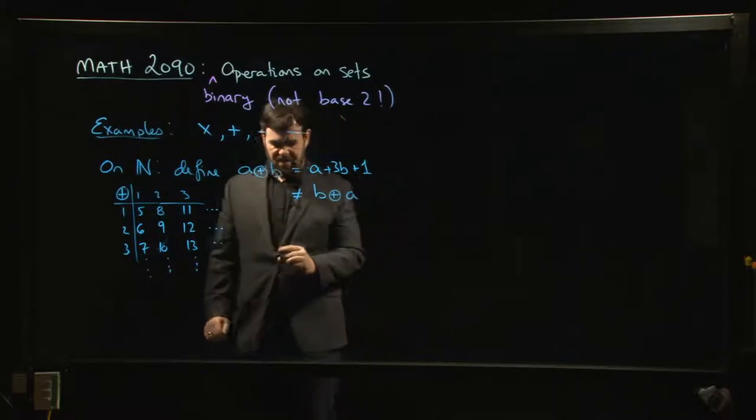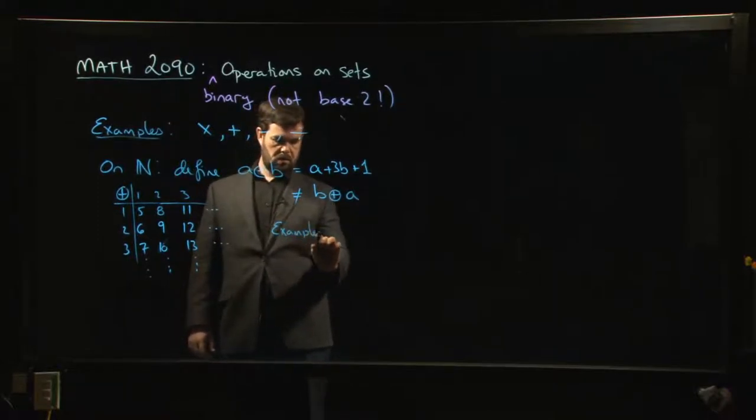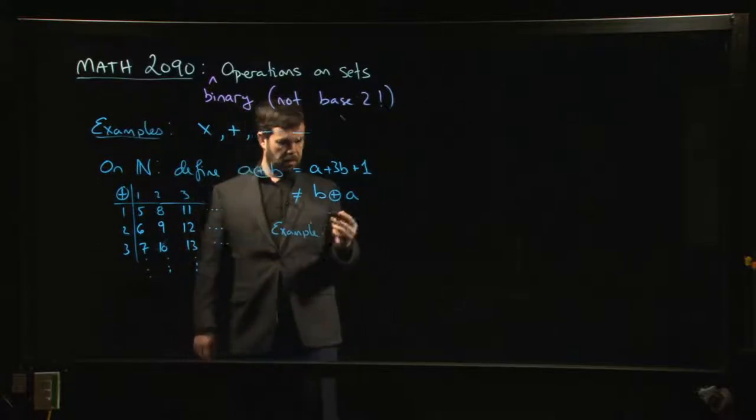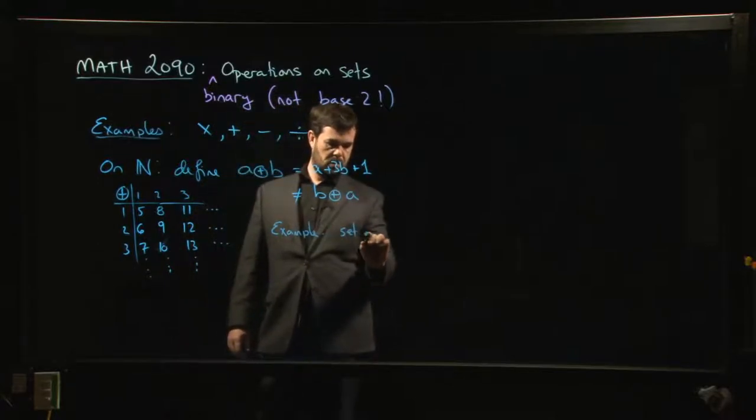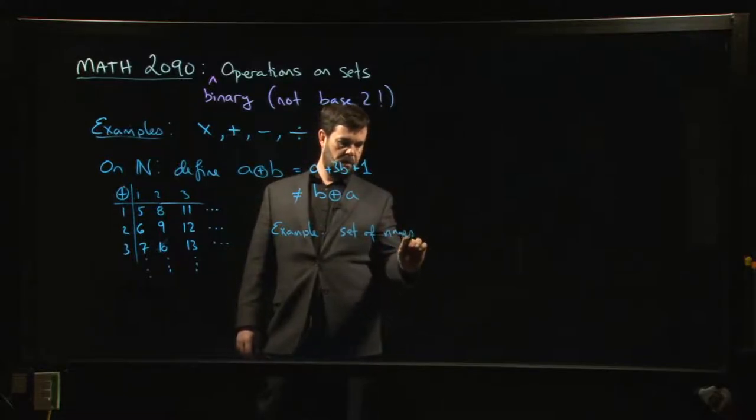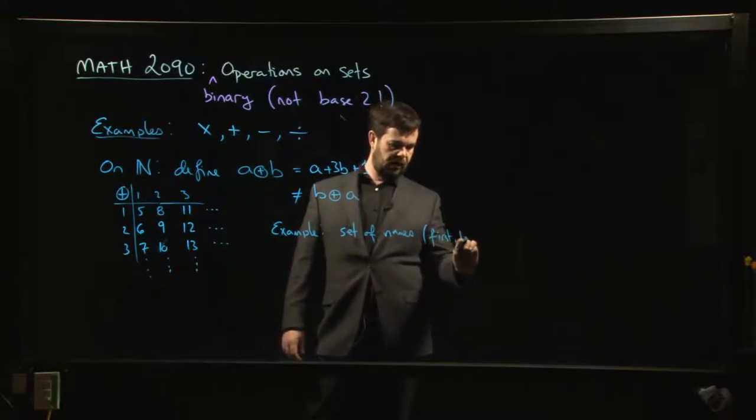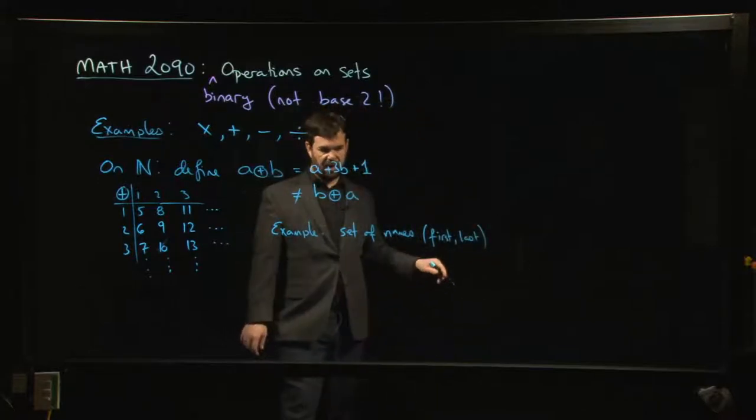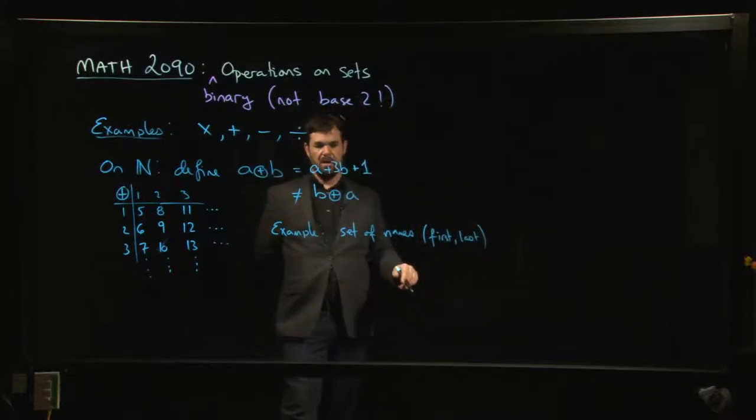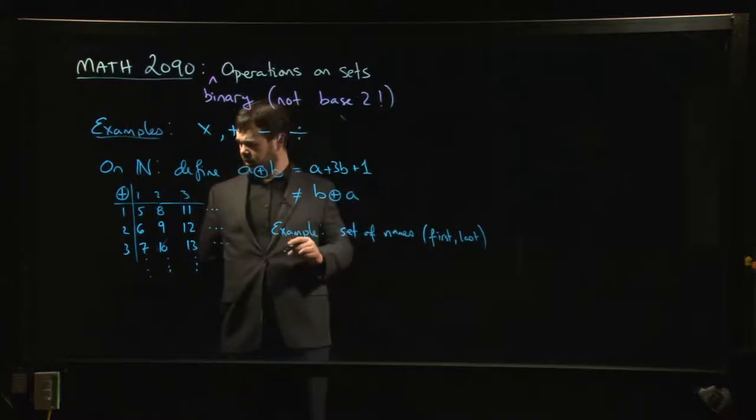So I think this, you know, just to give you an example of something that you haven't seen before—here's another example. We might do—let's take some set of names. And so let's say we do names that are of the form, you know, first name, last name. So we include first and last, and we'll do this operation here. Let's—I don't know—we need a symbol for it. Call it star.